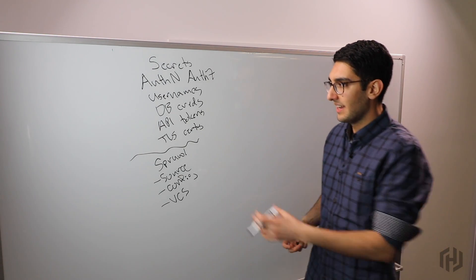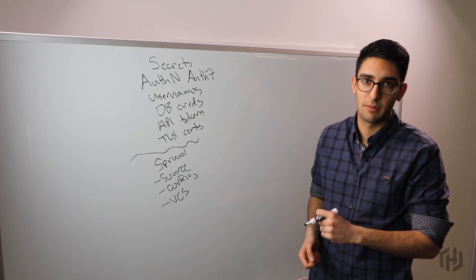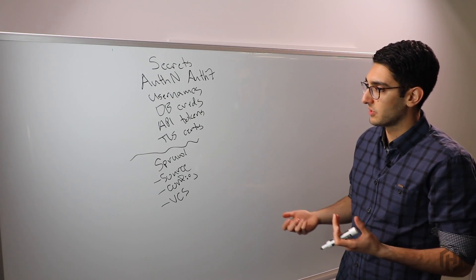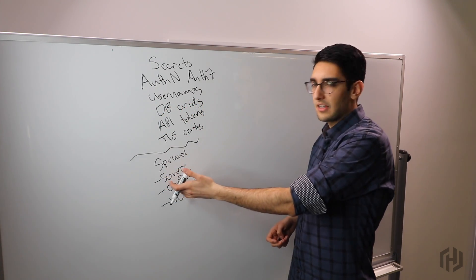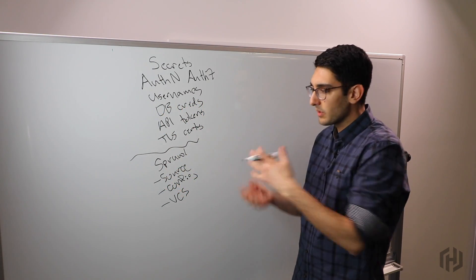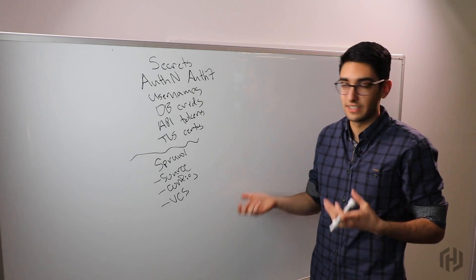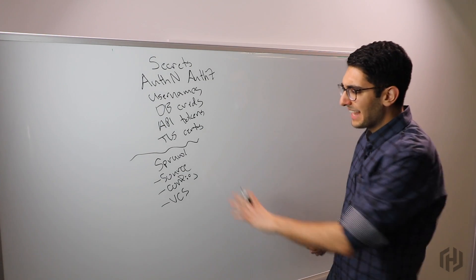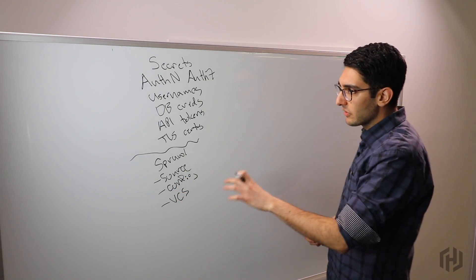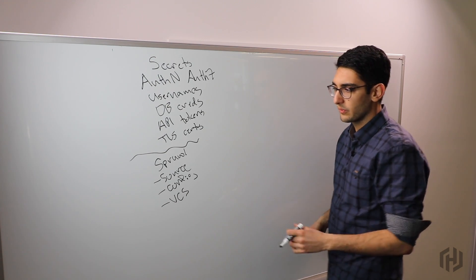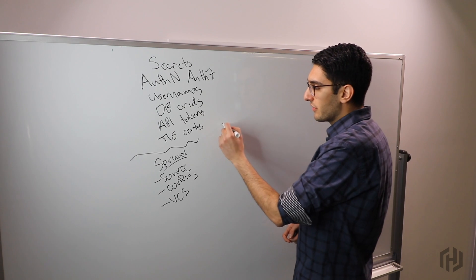We have no fine-grained ability to manage who has access or to audit who's done what with it. Worse yet, how do we actually rotate any of these things? If we realize we need to change our database credential due to a compromise or periodic rotation, it's very difficult if it's hard-coded in our source code or strewn about in so many different systems. This state of the world is what we refer to as secret sprawl.